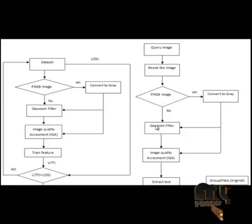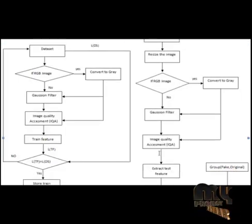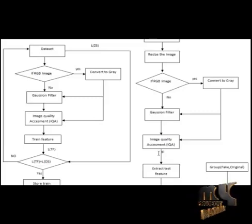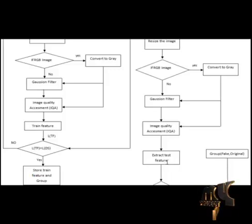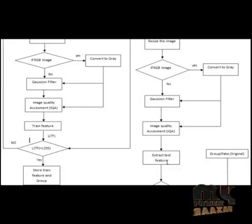The Gaussian-filtered image goes to the image quantification process, which compares two images — the filtered image and the non-filtered image — and gives an image quality value. We extract 11 image quality values. These values then go to the test feature extraction process, where all 11 quality values are stored as the test feature.